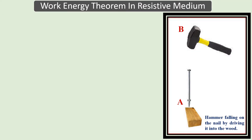Next, the work-energy theorem in a resistive medium. There are two basic kinds of energy: kinetic energy and potential energy, and they can be converted from one form to another. Consider a hammer raised to a height h above the ground — it has gravitational potential energy because it is in earth's gravitational field, and its weight is w = mg. When we release the hammer, it will do work on a nail to drive it into a wood block.